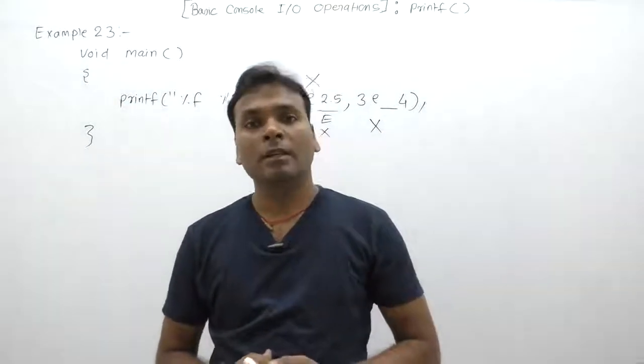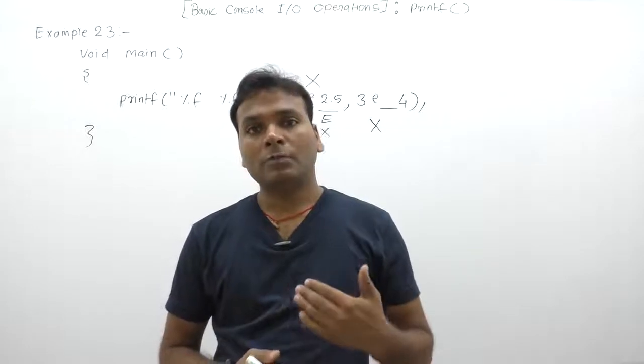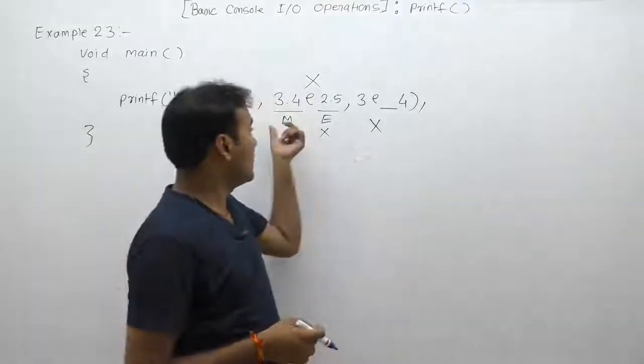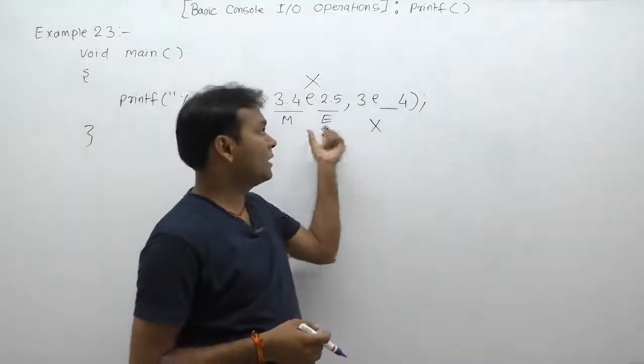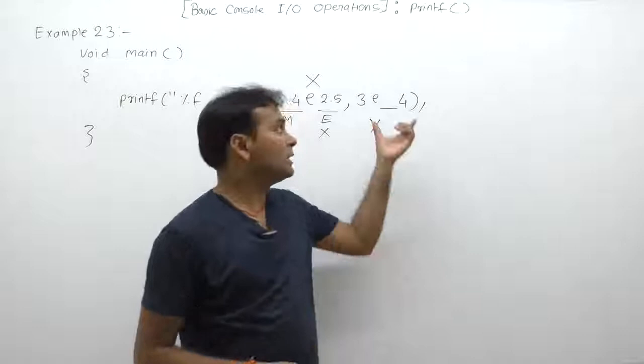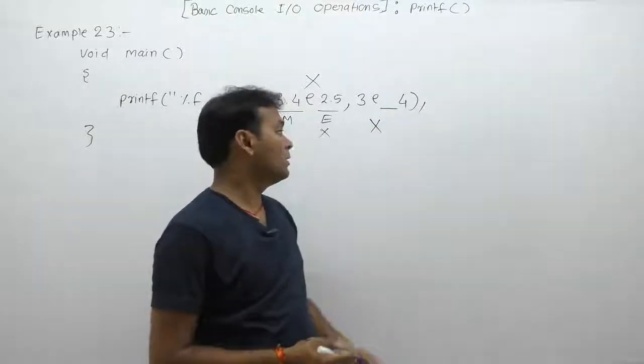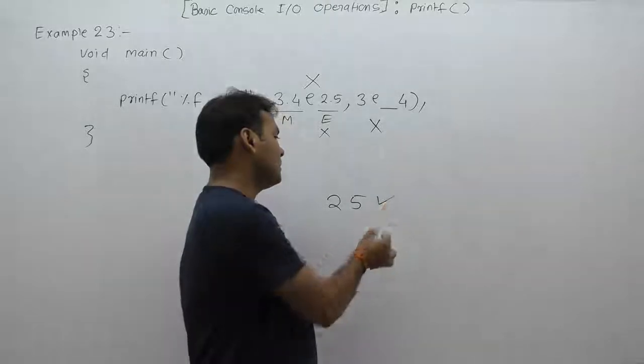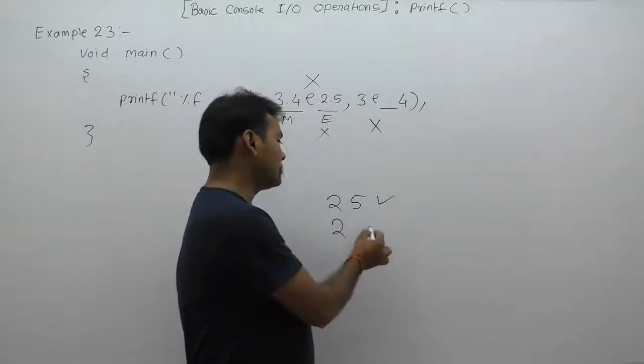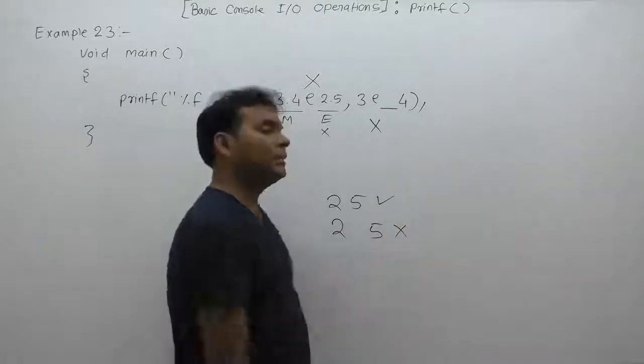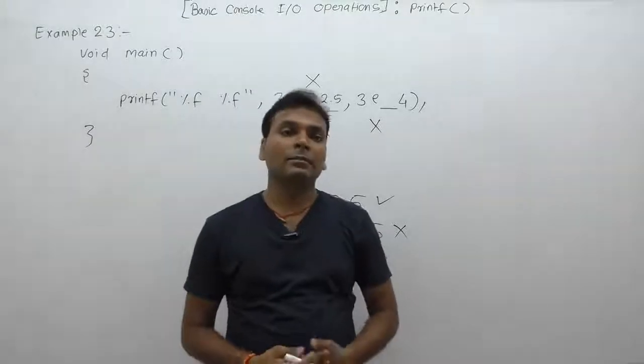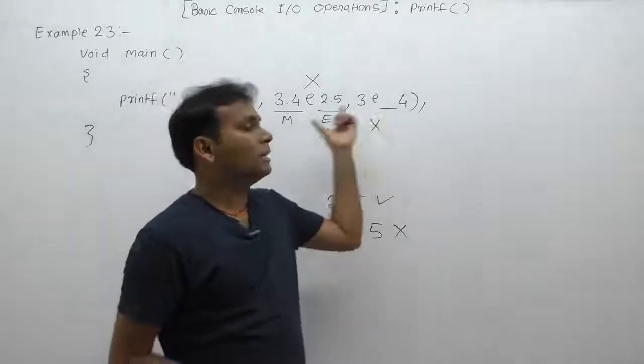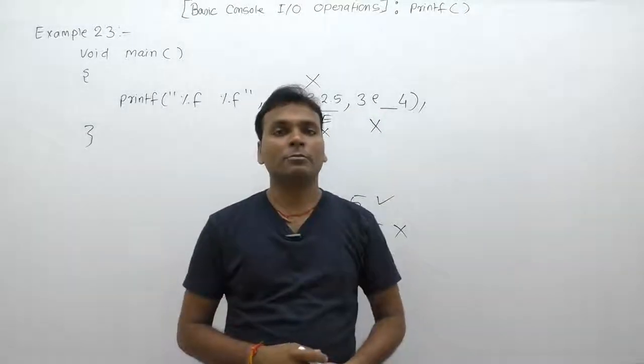In case of exponent representation, decimal point is allowed only in the mantissa part, not allowed for exponents. Same as space is not allowed. As an ordinary case, like we are writing 25, it is a valid integer. But here we are writing two space five—it is an invalid integer because inside any number space is not allowed. Therefore, both are invalid representations regarding exponent representation.